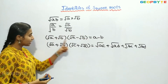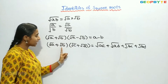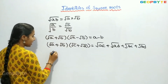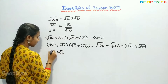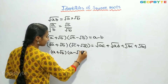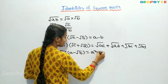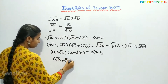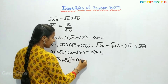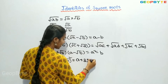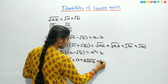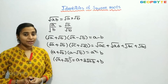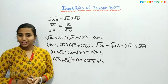Further identities: (a + root b)(a − root b) = a² − b; and (root a + root b)² = a + 2 root(ab) + b. These are some of the identities of square roots, which are very useful in solving irrational number problems.